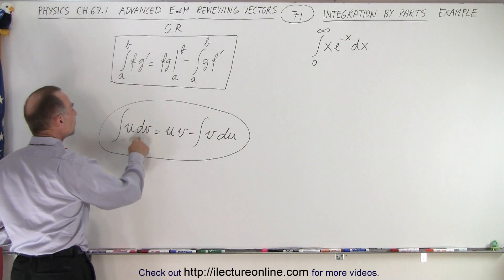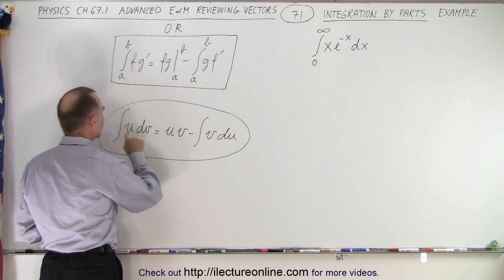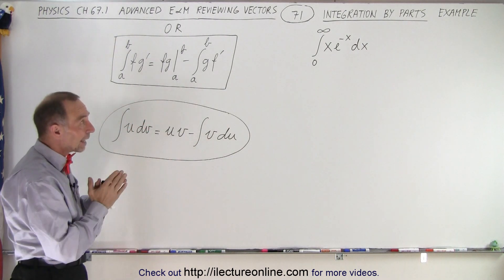Here we see that the integral of u dv equals u times v minus the integral of v du, where the u turns into a du and the dv turns into a v.